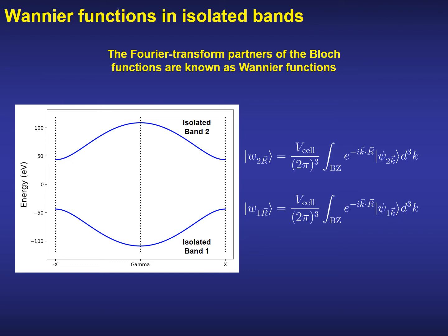In our simple example, if we have two isolated bands, each of them will generate a set of Wannier functions where the Fourier transform has to be performed on the Bloch functions describing a given band.